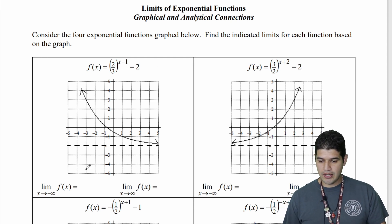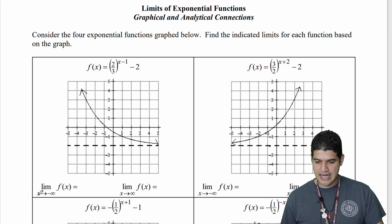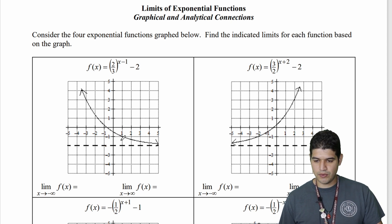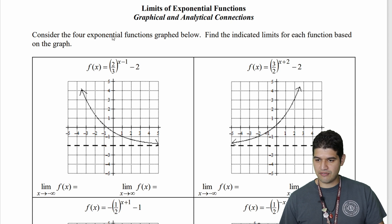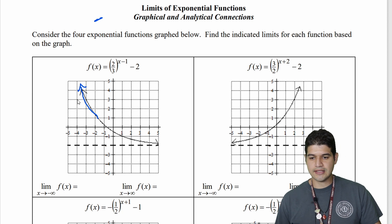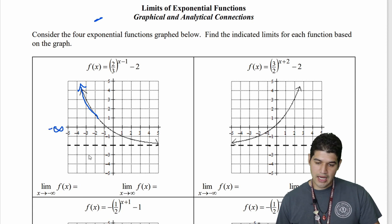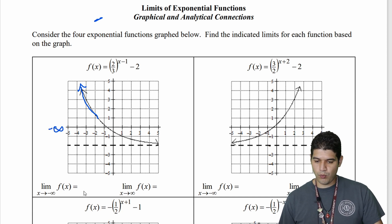We're going to look at the first one. We want to find the limit as x approaches negative infinity — so as we're going to the left. We can follow this graph and we can follow it up. As we're going to the left toward negative infinity, the y values go up to positive infinity.